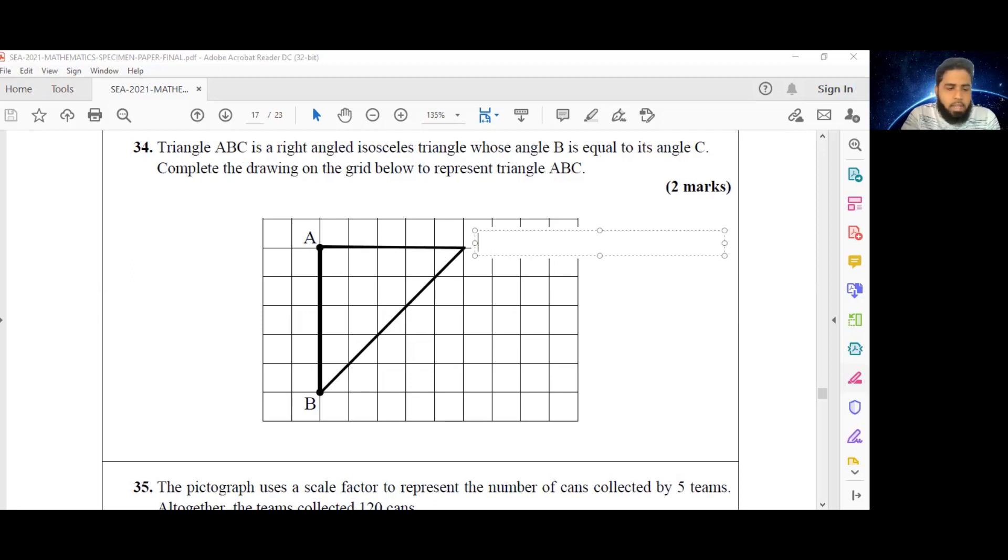A right angled isosceles triangle whose angles B and C will be equal to each other. We notice the side here, AC, has five units in length, and the side AB, five units in length. We have our right angle here at A, and because these two sides are equal in length—AB and AC—these angles B and C are also going to be equal in size.